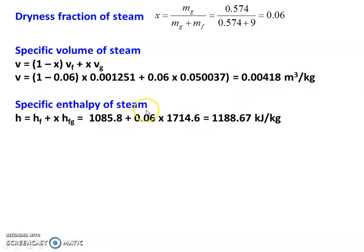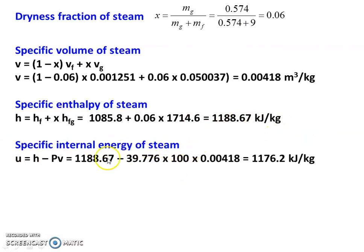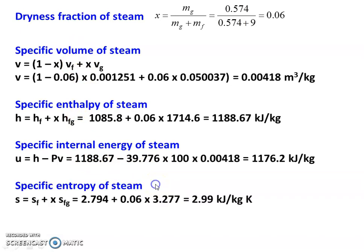Specific enthalpy: H = HF + X·HFG = 1085.8 + 0.06×1714.6 = 1188.67 kJ/kg. Specific internal energy: U = H − PV = 1188.67 − (39.776×100)×0.00418 = 1172.2 kJ/kg. Specific entropy: S = SF + X·SFG = 2.794 + 0.06×3.277 = 2.99 kJ/kg·K.